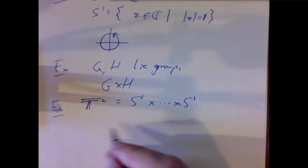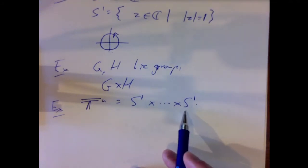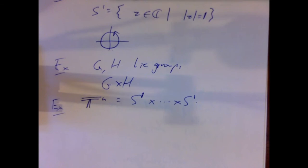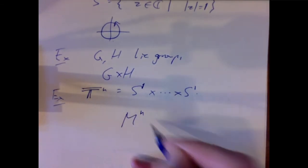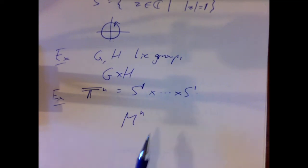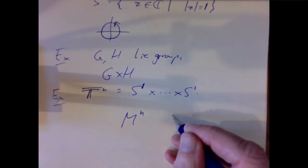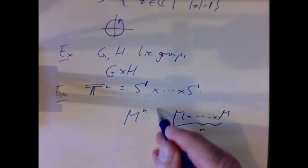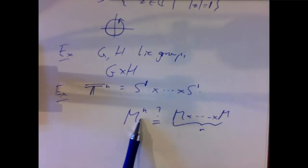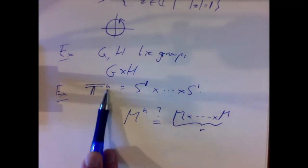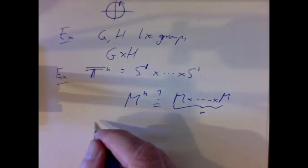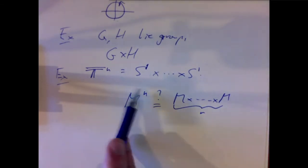Note that T^n is not S^n — the product of circles is not the same as the n-sphere. In differential geometry, when we write M^n we usually just mean M as an n-dimensional manifold. The torus T^n is deliberately not called S^n to avoid confusion with the sphere. So the torus is a Lie group for the obvious reason.